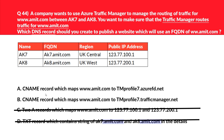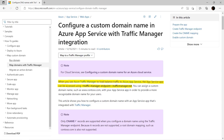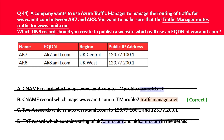Let's look at options A and B together. Both contain a CNAME record, but the difference lies in the endpoint: trafficmanager.net versus azurefd.net. Since only CNAME records are supported when configuring a domain name using the Azure Traffic Manager endpoint, option B is the valid answer because it contains .trafficmanager.net. The official documentation confirms: when you use Azure Traffic Manager to load balance traffic to Azure App Service, the app is accessed using the Traffic Manager endpoint. Therefore we log B as the correct answer.